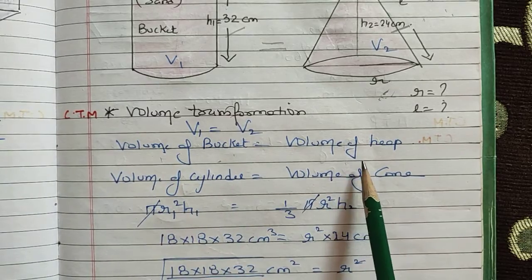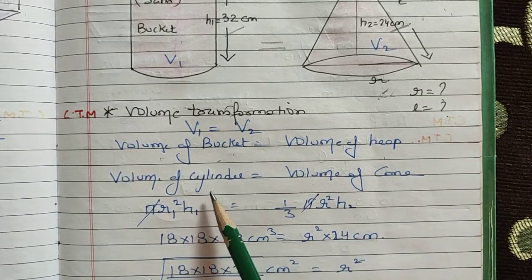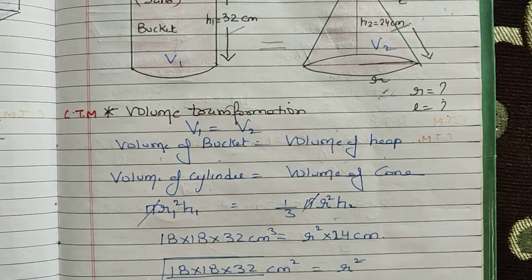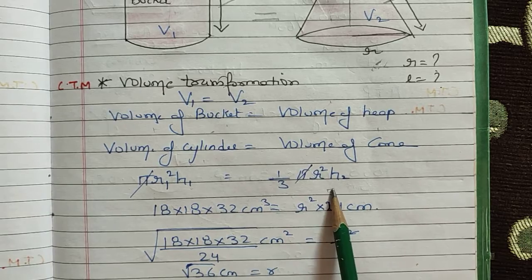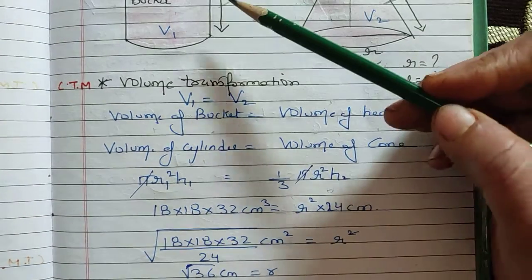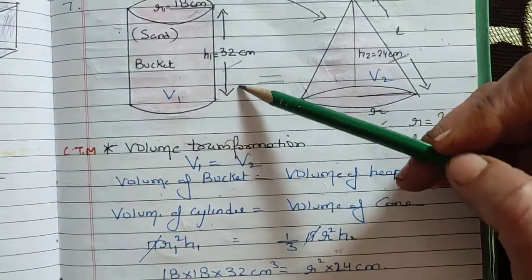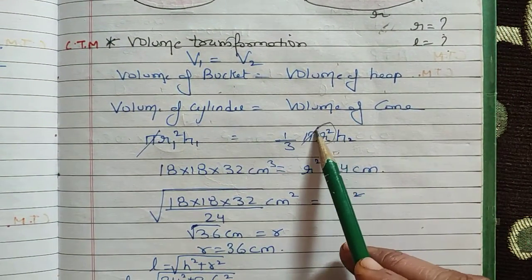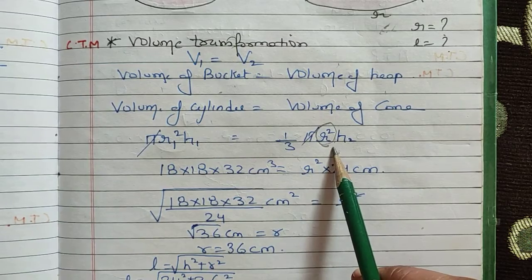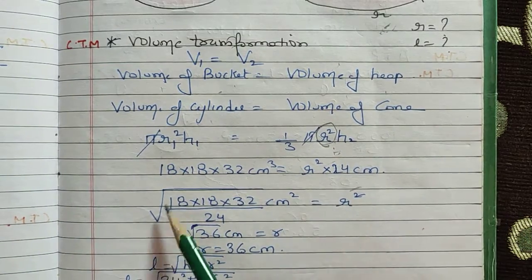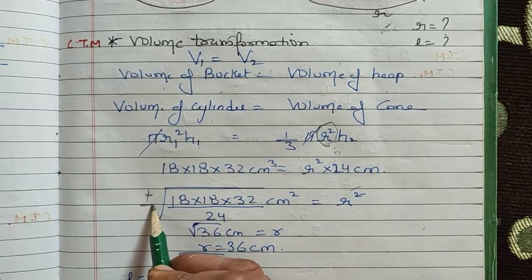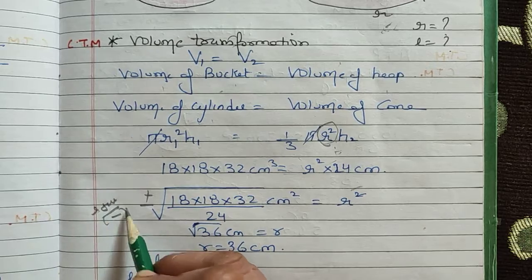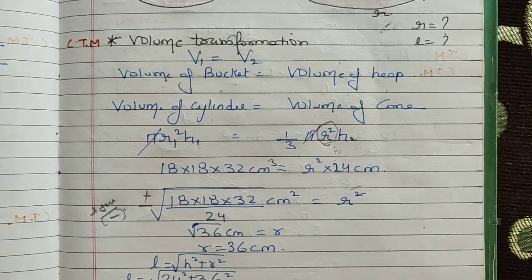Volume of the bucket (cylinder) equals volume of the cone. The cylinder formula is πr²h, and the cone formula is (1/3)πr²h. Putting in the values — cylinder: r = 18 cm, h = 32 cm; cone: h = 24 cm — we solve for the cone's radius. We get a squared value and take the square root, rejecting the negative value because radius must be a positive real-life value.